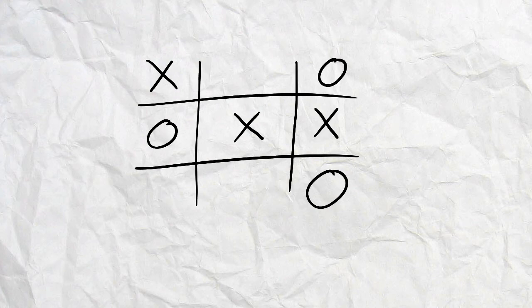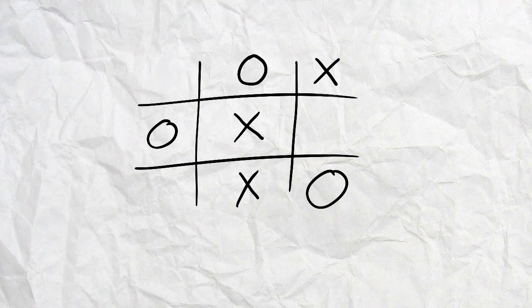Essentially, you can always guarantee that your opponent doesn't win. So if you always choose to block your opponent from winning, it's essentially a draw.